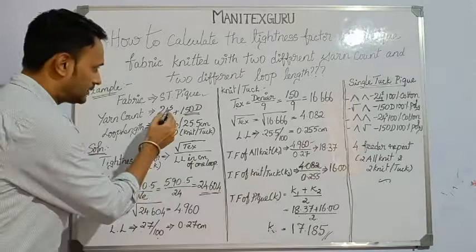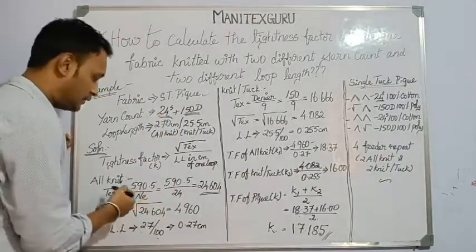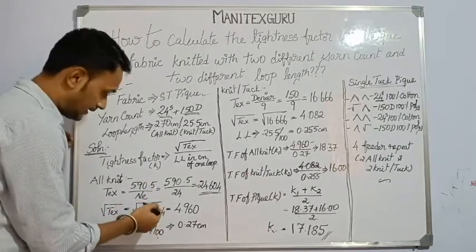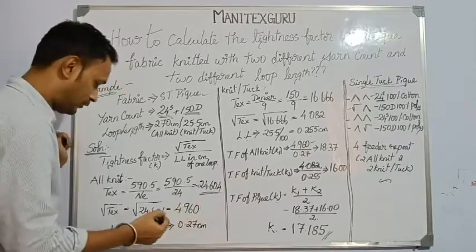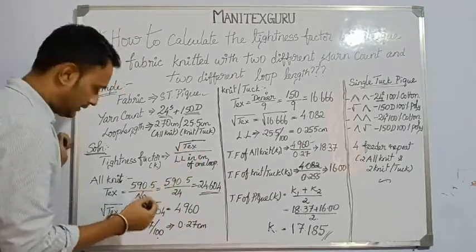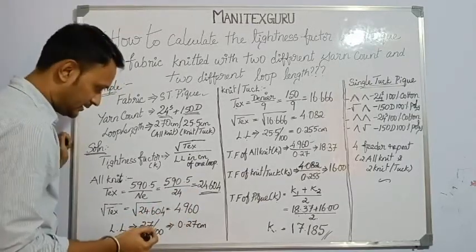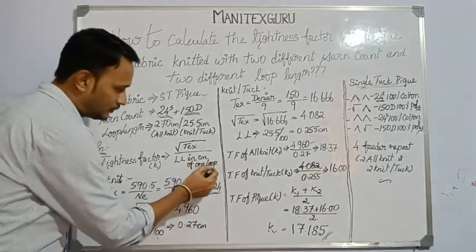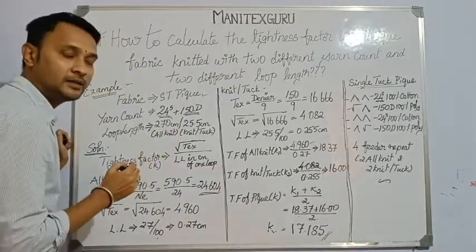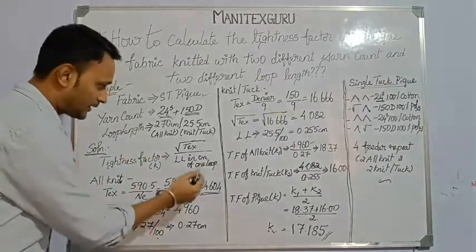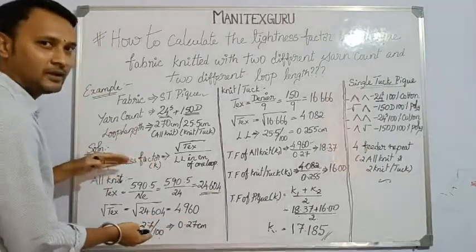For the all-knit tightness factor, we need the tex value. The yarn count is in Ne, so we use the conversion: tex = 590.5 ÷ Ne = 590.5 ÷ 24 = 24.604. The square root of tex is √24.604 = 4.960. The loop length is given as 27 cm per 100 loops, so per one loop it is 27 ÷ 100 = 0.27 cm. The data for all-knit is now ready.